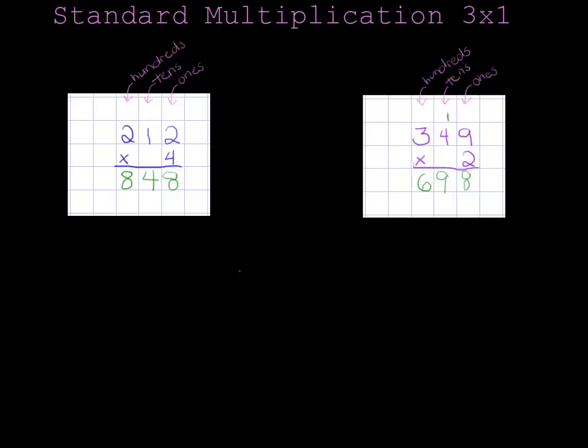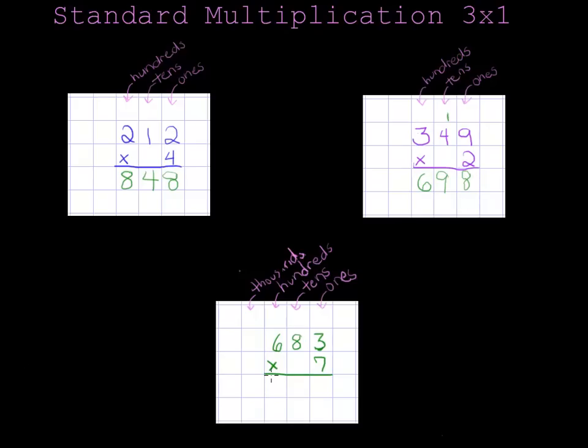Let's try one more example. This time I'll do 683 times 7. Beginning in the ones column, 7 times 3 is 21. But that's too big, so I have to split it up. I'll put the 1 down below and carry the 2 into the next column.